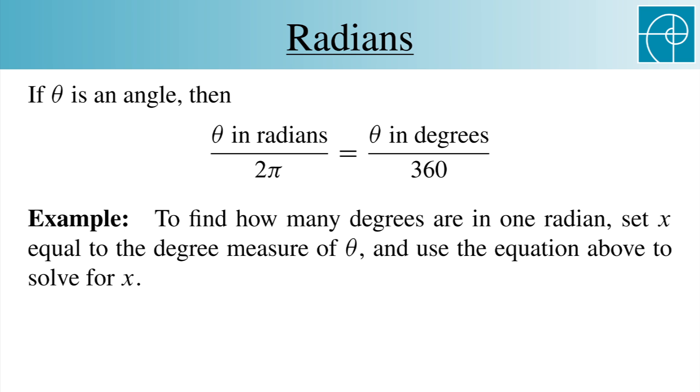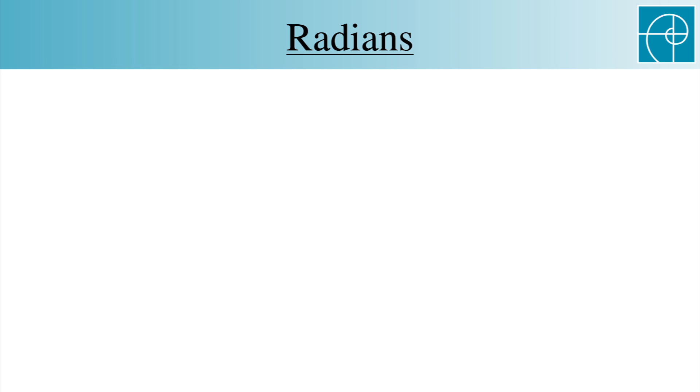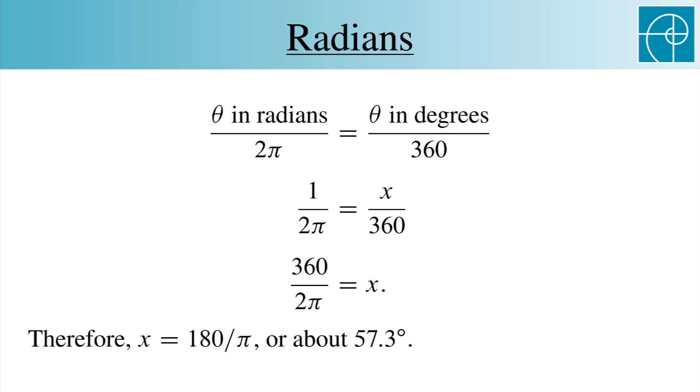For example, if you want to know how many degrees are in one radian, you can set x equal to the degree measure of theta, and use this equation to solve for x. This gives us 1 over 2 pi equals x over 360, so x simplifies to 180 over pi, which is about 57.3 degrees.